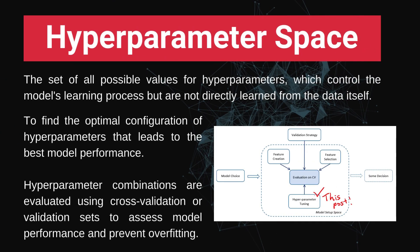The third technique is hyper parameter space. This covers all the possible values of hyperparameters which control the model learning process but are not directly learned from the data. To find the optimal configuration that leads to the best model performance, we can use techniques like grid search CV, random search CV, and cross-validation to prevent overfitting and underfitting.